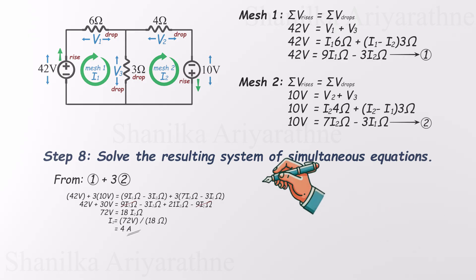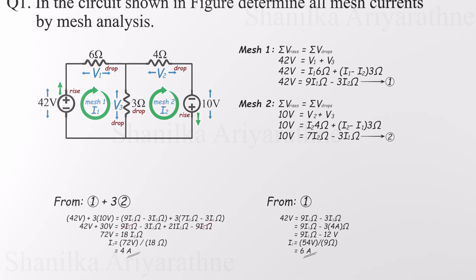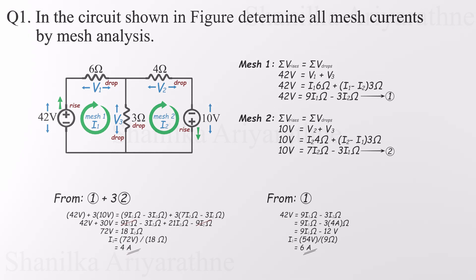Now let's wrap it up by substituting the I2 value into equation 1. Plugging in I2 is 4, and solving the equation gives us I1 is 6 amperes. And there we have it, both mesh currents found. I1 is 6 amperes, and I2 is 4 amperes.